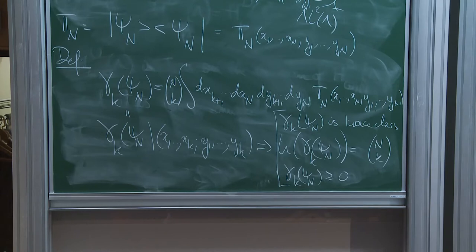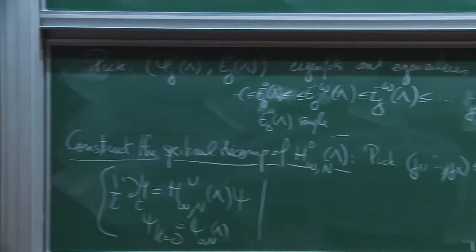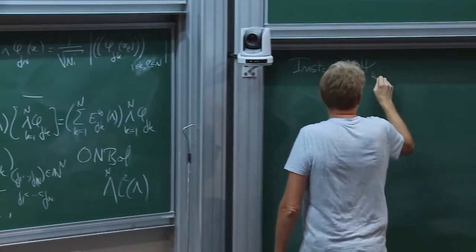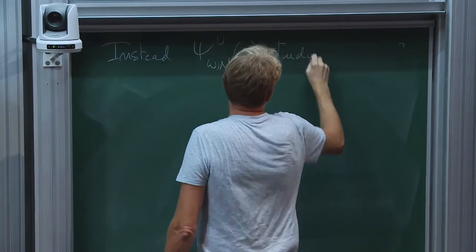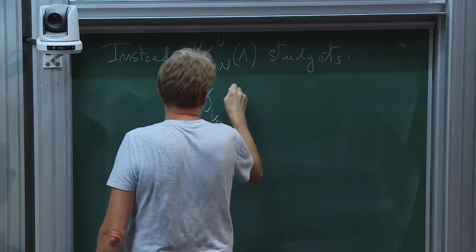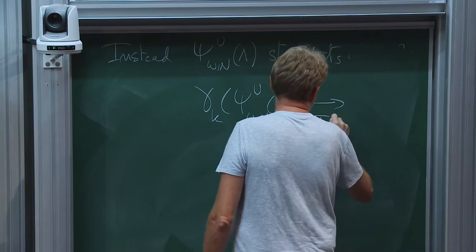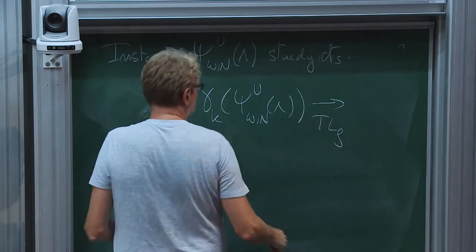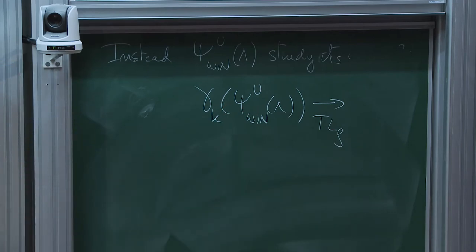So instead of studying psi omega n u lambda — the ground state — I am going to study its k-particle density matrix gamma k u, and how it behaves in the thermodynamic limit. We study these marginals and study them in the limit. Here we have a fixed number of particles and we can make sense of this. So the first thing I wanted to do is see what happens in the free case, without any interactions.